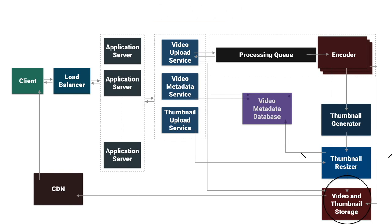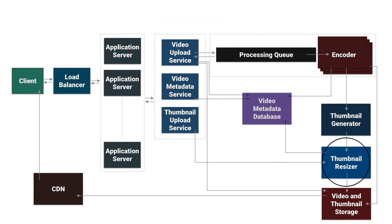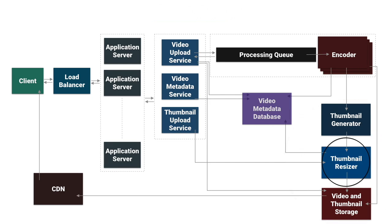When the encoder finishes, it stores the video in video storage and updates the video metadata table with the video path. Then the encoder asks the thumbnail generator to generate a thumbnail for the video. The thumbnail then goes to the thumbnail resizer, where it gets resized and stored in thumbnail storage. We also update the video metadata table with the thumbnail path. We resize the thumbnail into many different sizes to provide different resolutions for different devices.